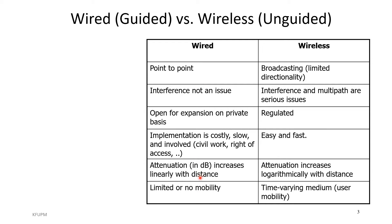In wired systems, when you speak about mobility, there is limited or no mobility at all because of being connected with the wire. In wireless, the user can be mobile, but then you have to observe a time-varying medium, the Doppler effect, and other topics we'll cover later on.